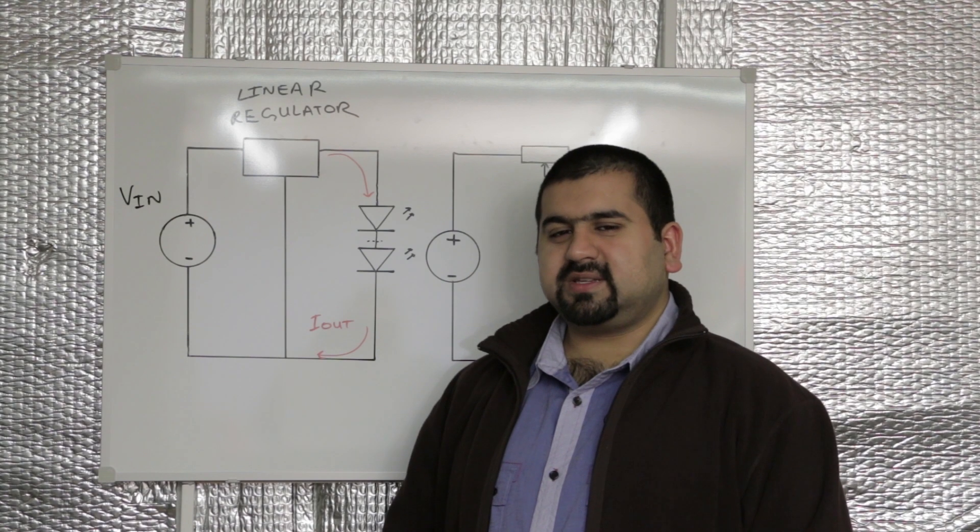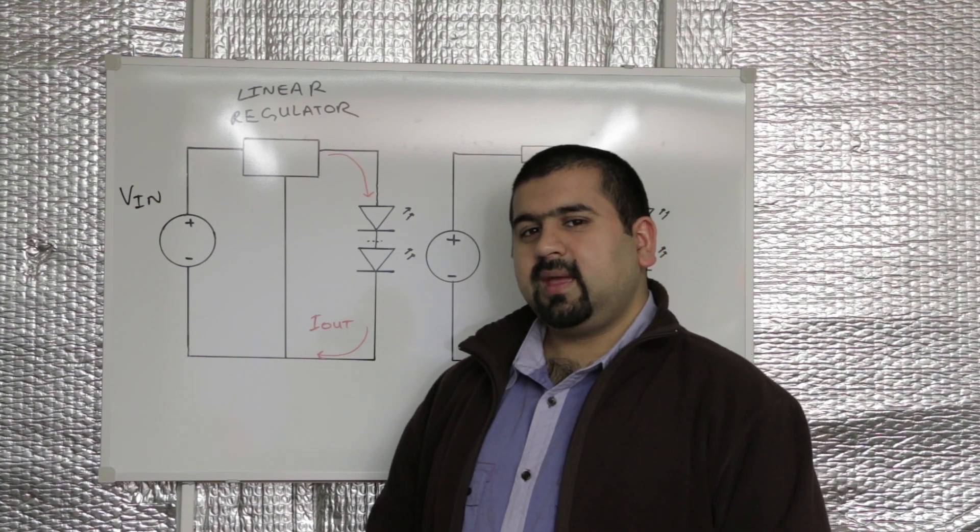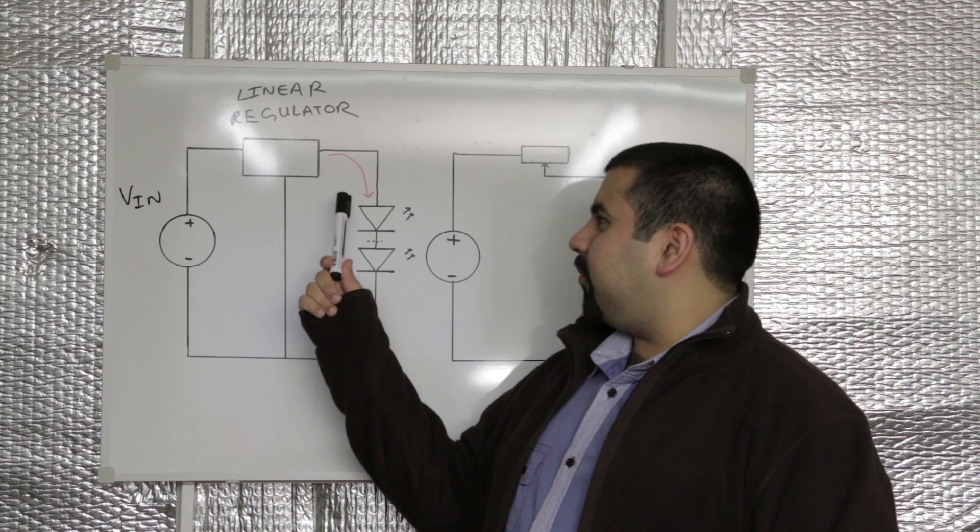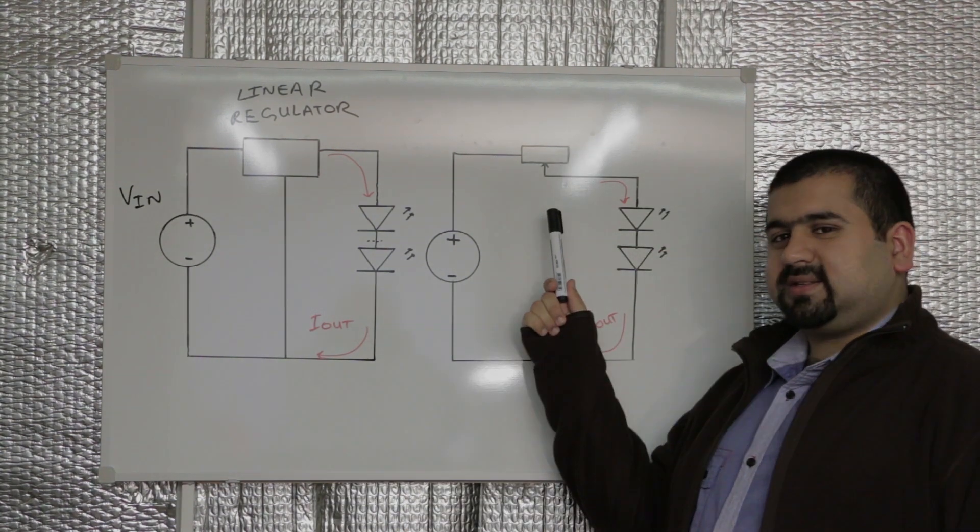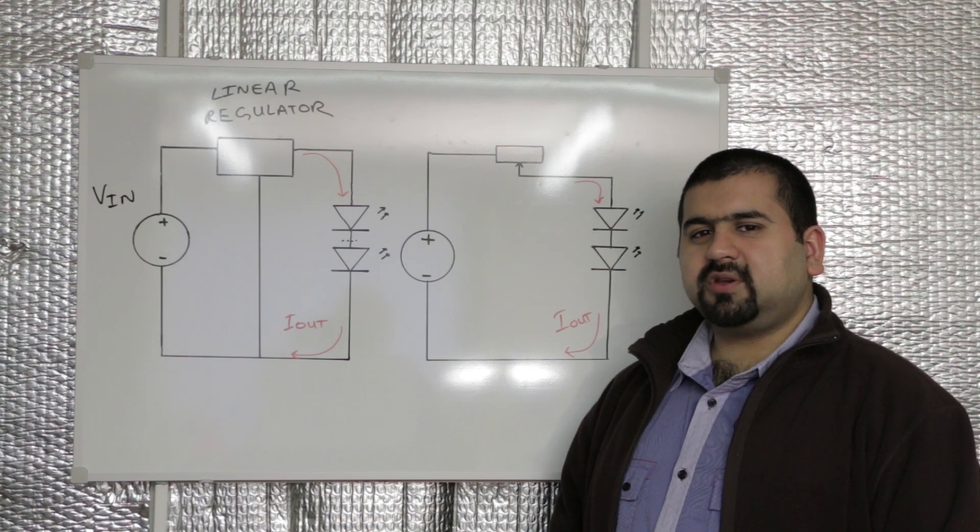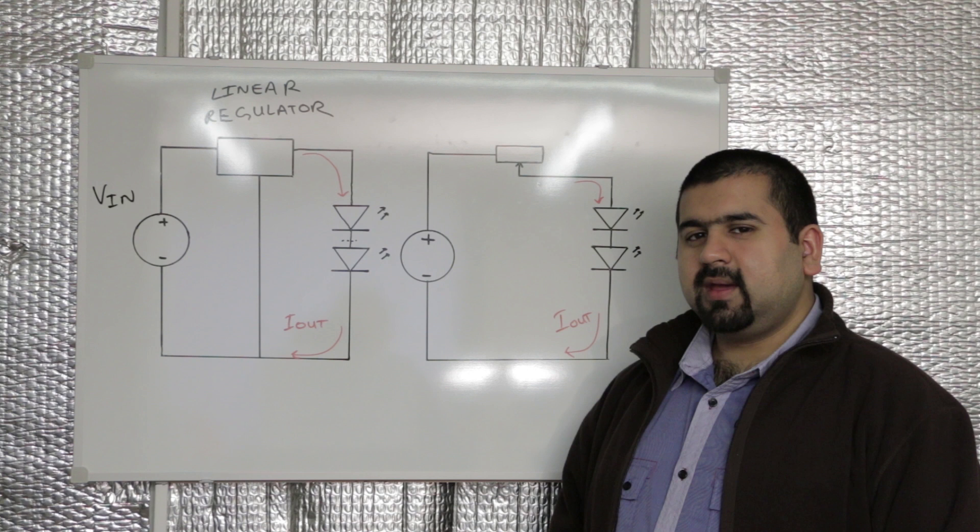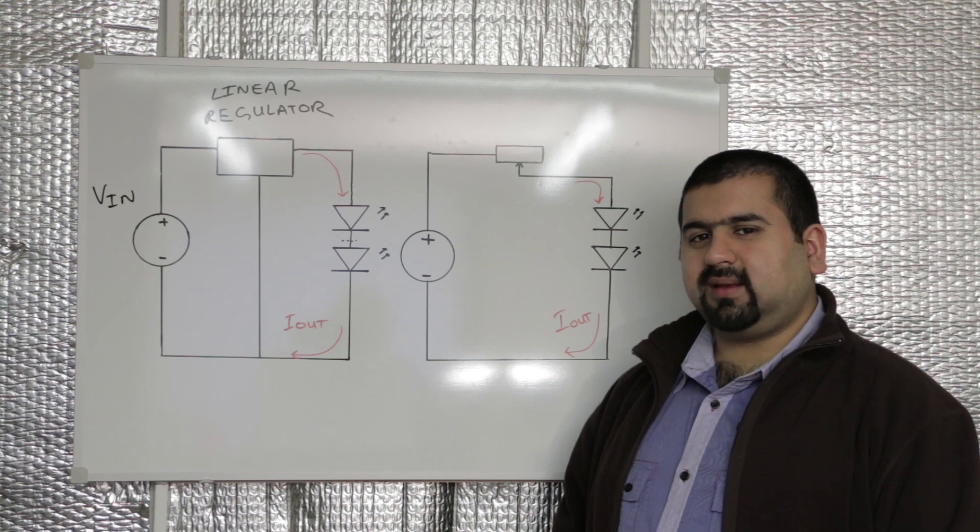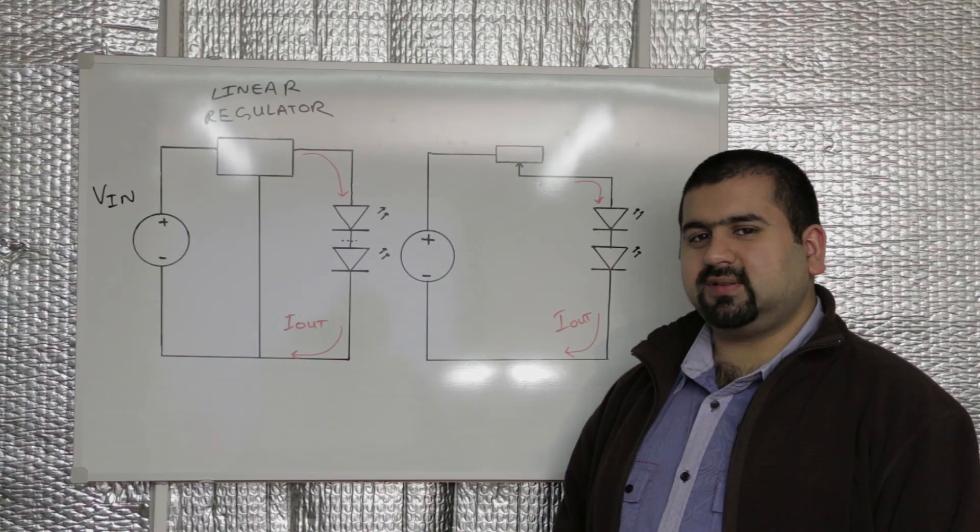As we can't use a resistor for high powered applications, let's look at a linear regulator. A linear regulator maintains the output current no matter what the input voltage is. This means it's acting like a variable resistor. The maximum efficiency in a linear regulator is when Vin equals Vout. This means that the regulator is acting like a zero ohm resistor. As you increase the input voltage, the resistance increases. This creates a buildup of heat and reduces efficiency.